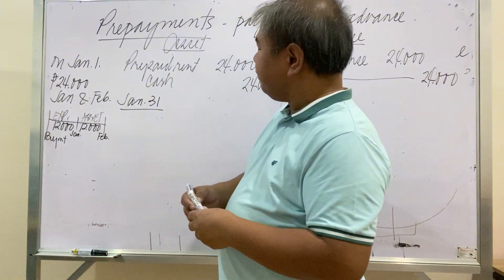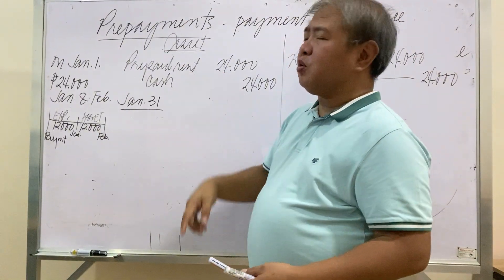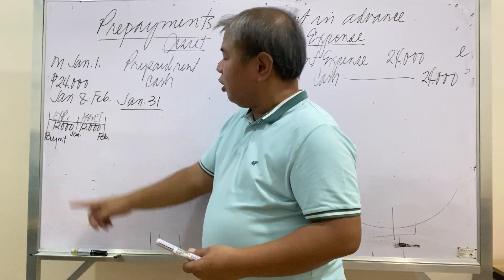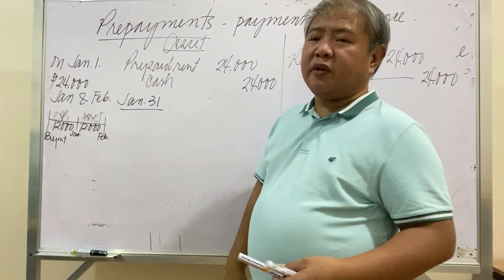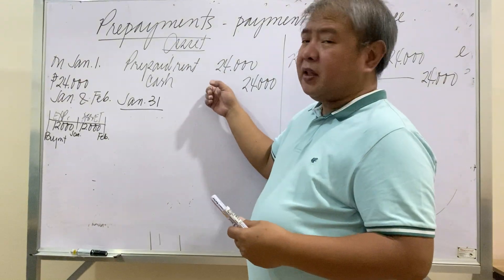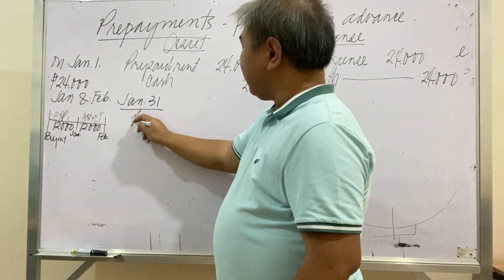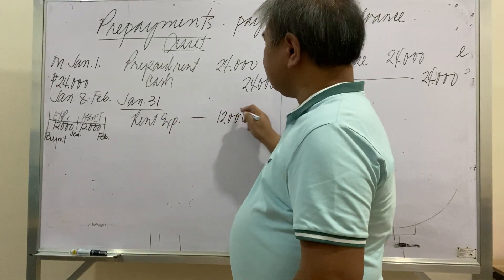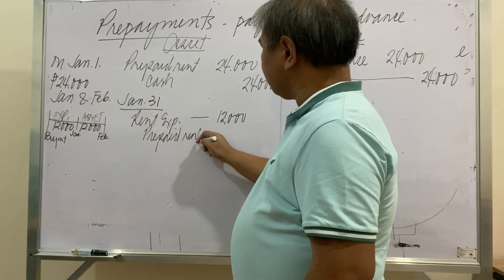Under the asset method, we initially charged everything to Prepaid Rent (an asset) for 24,000. At January 31, the asset should only be 12,000. So we make an adjusting entry: debit Rent Expense for 12,000 and credit Prepaid Rent for 12,000.